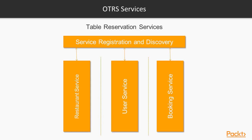As you can see, on top of that we will have service registration and discovery. This is where we will use Netflix OSS and the Eureka product. This diagram shows each microservice working independently. This is the reason microservices can be developed, enhanced, and maintained separately without affecting others.